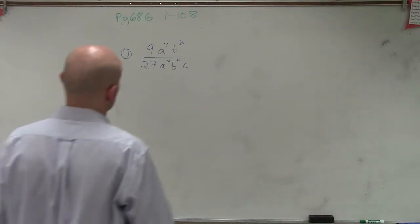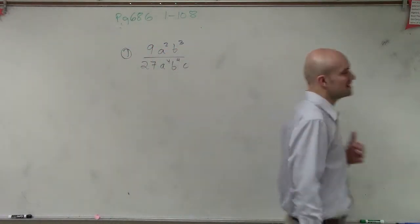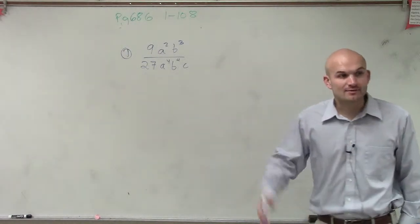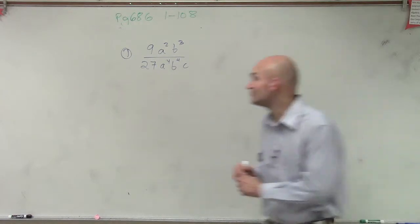On a problem like this, we have 9a squared b cubed divided by 27a to the fourth b to the fourth c. So the main thing we want to do is just break this up and see how we can simplify this.